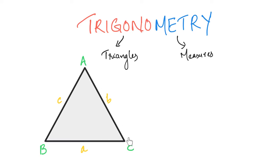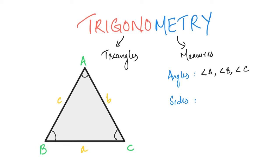We are going to learn a triangle. There is a triangle ABC, and there are three measures. We are going to learn the angles: Angle A, B, C. And the sides: small a, small b, small c. That is, angle A's opposite side is small a; angle B's opposite side is small b; angle C's opposite side is small c.